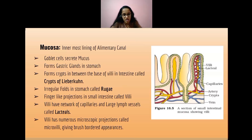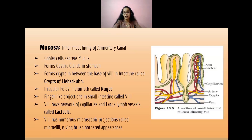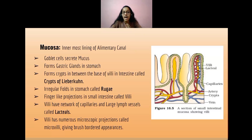The finger-like projections in the small intestine are called villi. Villi have a network of capillaries and large lymph vessels called lacteals. The villi also have numerous microscopic projections called microvilli, which give a brush border structure.